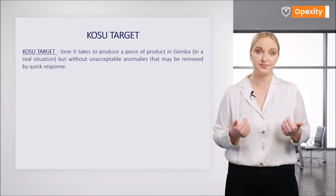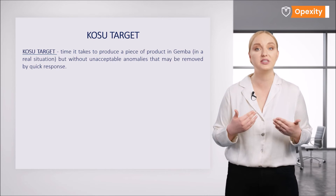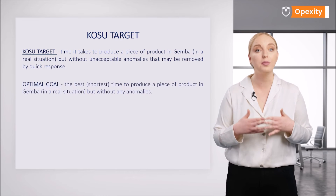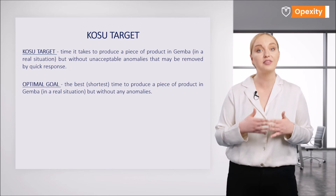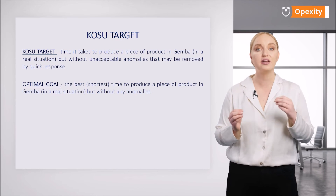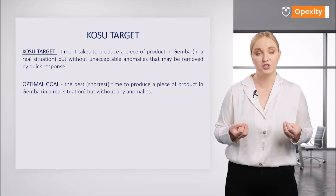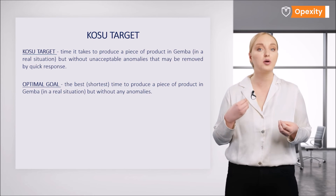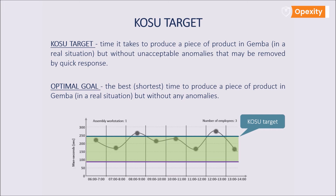There is also an additional parameter in the Kosu standard. It is called the optimal target, and it results from the fact that we aim not at the Kosu target itself, but at the area between it and a value that is without waste but achievable by the workstation, manufacturing cell, or production line. This can be seen in the chart. The blue line indicates the Kosu target, and the purple line the optimal target.